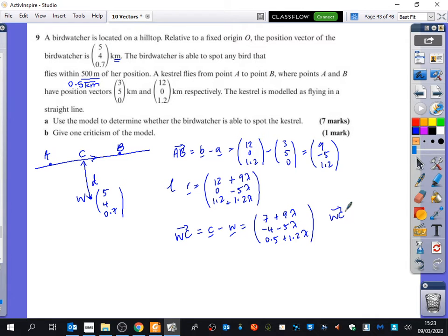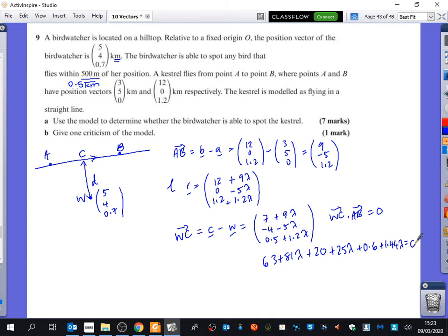And I know that WC dotted with AB is equal to 0 because those are the things that are perpendicular. So I'm going to do this one multiplied by 9. So that's 63 plus 81 lambda. This one multiplied by minus 5 which is plus 20 plus 25 lambda. And this one multiplied by 1.2 which is 0.6 plus 1.44 lambda. And that is all equal to 0.